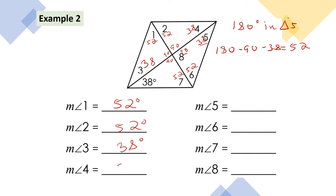Angle 4 = 38°, angle 5 = 38°, angle 6 = 52°, angle 7 = 52°, and angle 8 = 90°. I have found the measures of all eight angles.